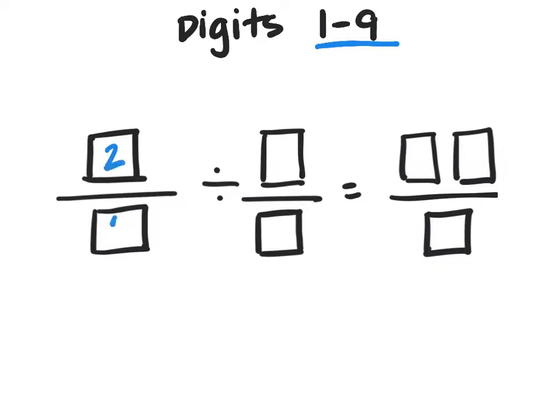Maybe I'll start with 2 fourths, and then I'm going to divide by 3 eighths. So I'm thinking, how many 3 eighths are in 2 fourths?